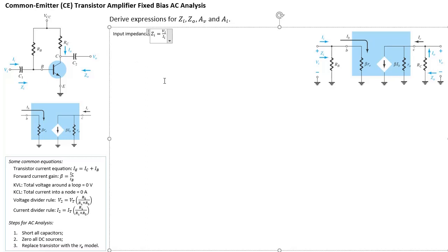Now we need to figure out what VI and II are. Looking at IB, it's a current that flows into beta RE. We can write an expression linking IB with II — the current II comes in and splits between RB and beta RE. So this is a current divider. Using the current divider rule, IB equals II multiplied by RB, divided by RB plus beta RE.